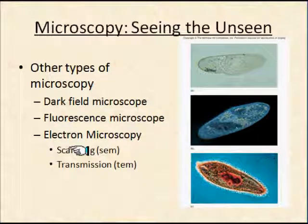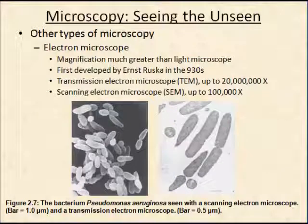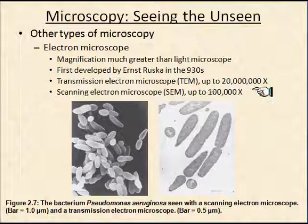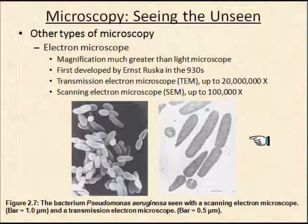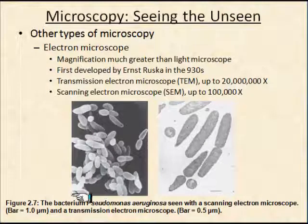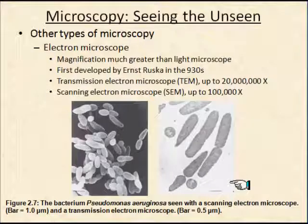The electron microscope has two types: scanning and transmission electron microscopy. You can get really fine detail with these. A light microscope gives a magnification of about 1000, but a transmission electron microscope can give a magnification of 20 million, and a scanning electron microscope up to 100,000. The images shown here come from transmission and scanning electron microscopes — very sharp detail. The scanning electron microscope gives a three-dimensional view, while transmission lets you see structures that lie within the cell.